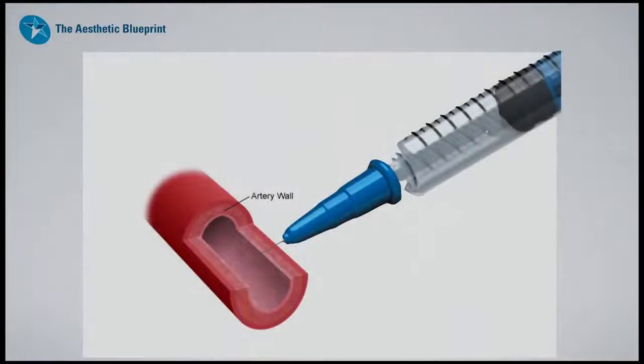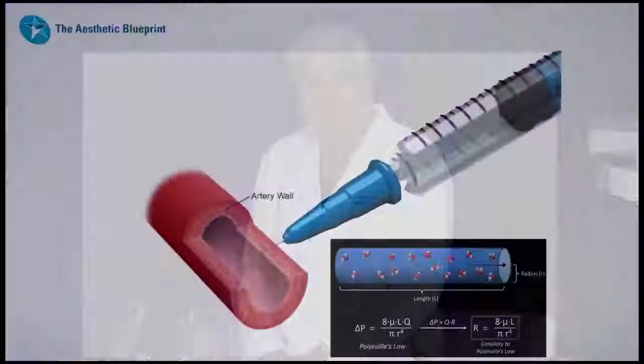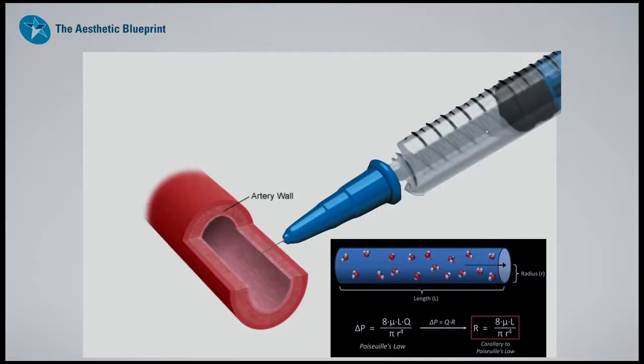What you don't want is the tip of the needle to be in a major vessel. The second you press on the plunger, the pressure at the tip of the needle exceeds arterial blood pressure — systolic, 120, 140, maybe the patient's anxious, 160 to 180. Then the product does not care which way the blood is flowing; it follows Poiseuille's law: resistance to flow is inversely proportionate to the fourth power of the radius.